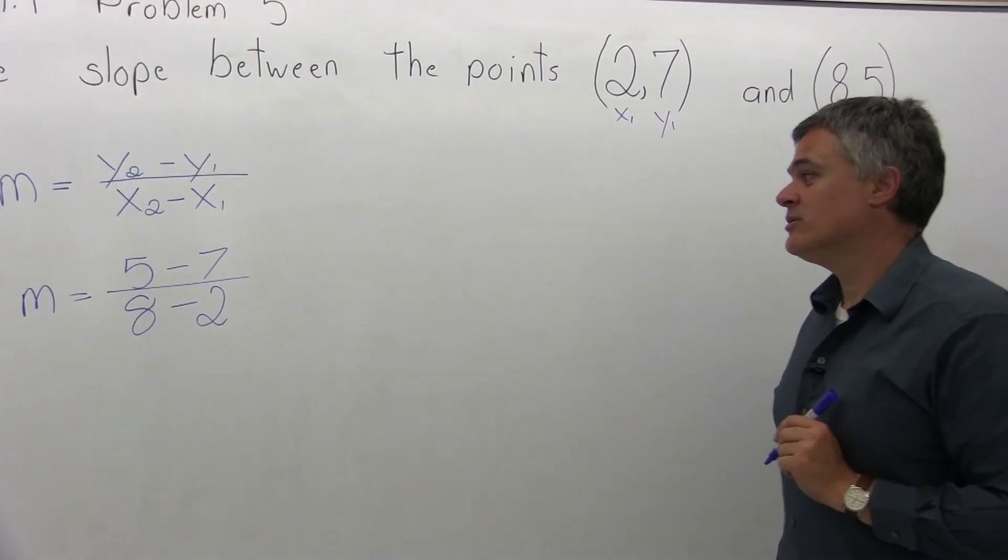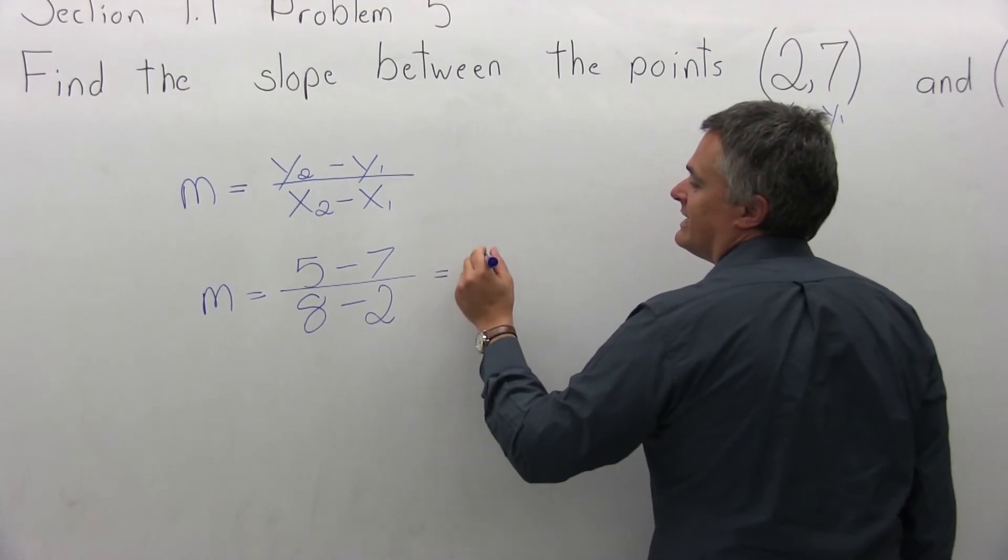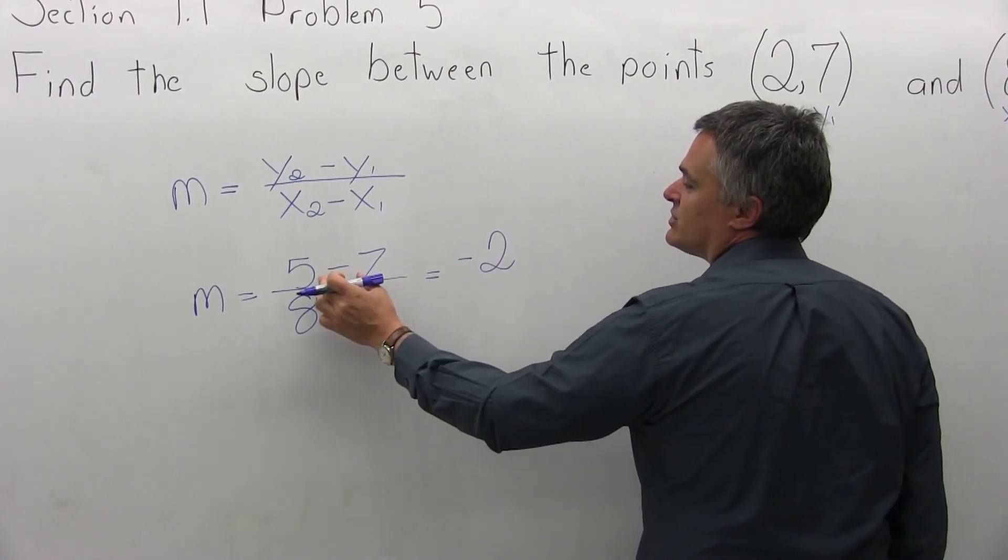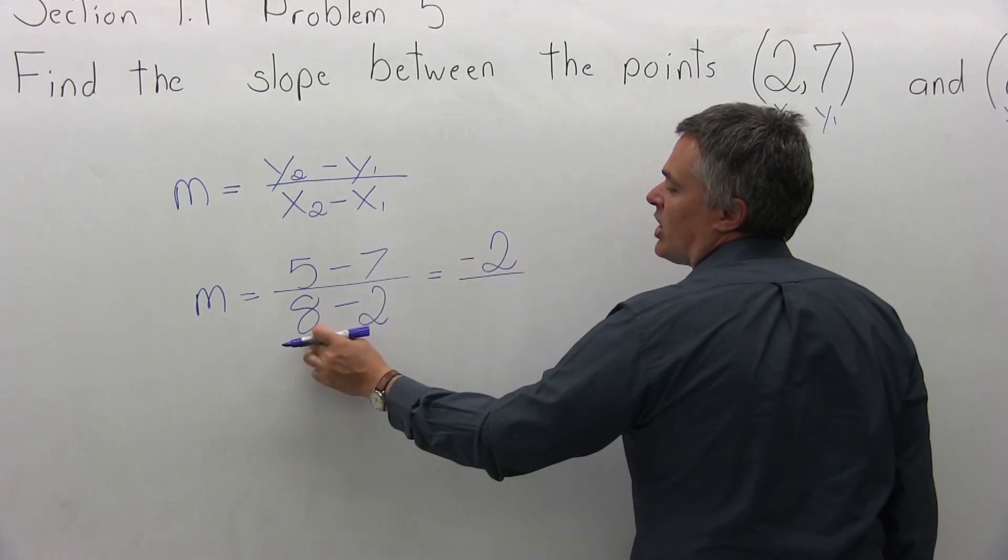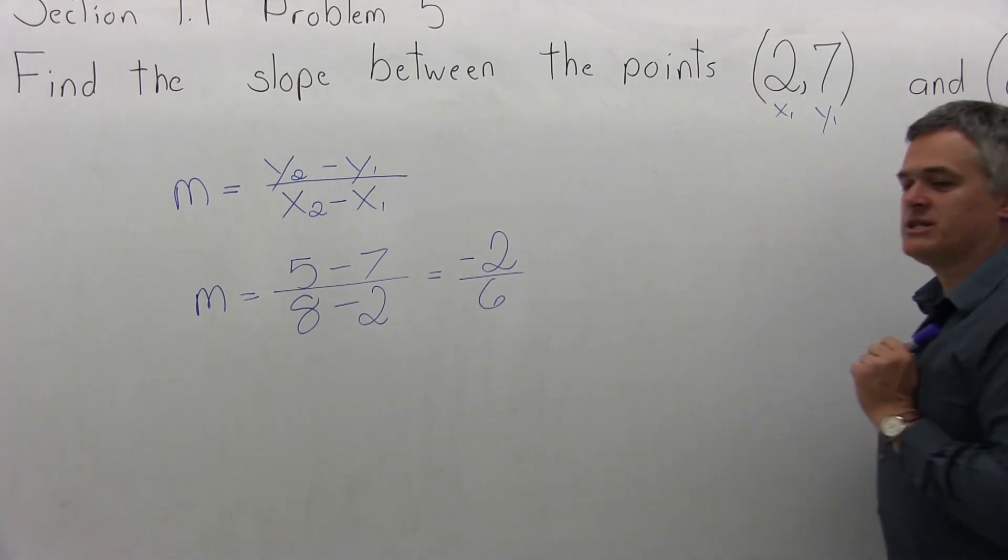And now that it's filled in, you can do the math. On top, 5 minus 7 is negative 2. Again, pay attention to the sign, it's not just 2, it's negative 2, that makes a difference. In the denominator, 8 minus 2 is positive 6.